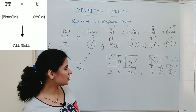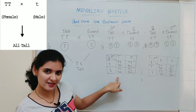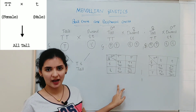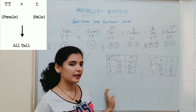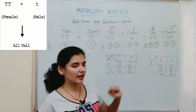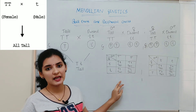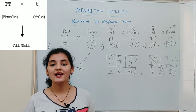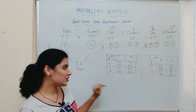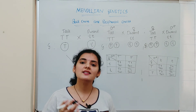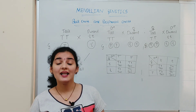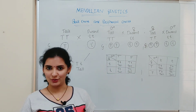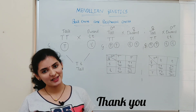So a reciprocal cross is one in which the character or trait remains the same but the sexes are reversed. In this case we get the same phenotypic and genotypic ratio — a phenotypic ratio of 4:0 in both cases. This holds true for most characters because they are autosome-linked. However, if the character is a sex-linked trait, then there will be a change in the phenotypic and genotypic ratio of the offspring produced.